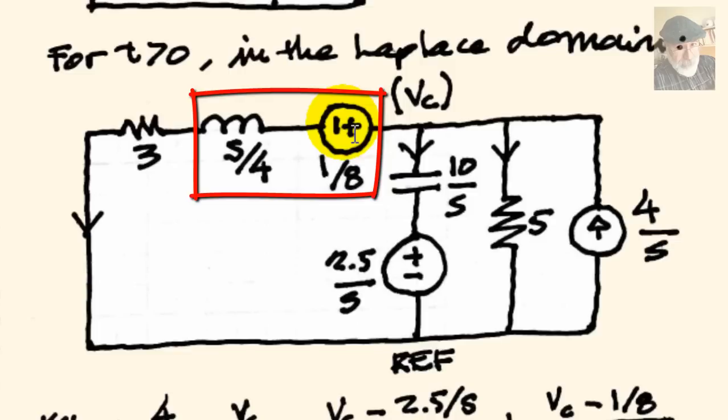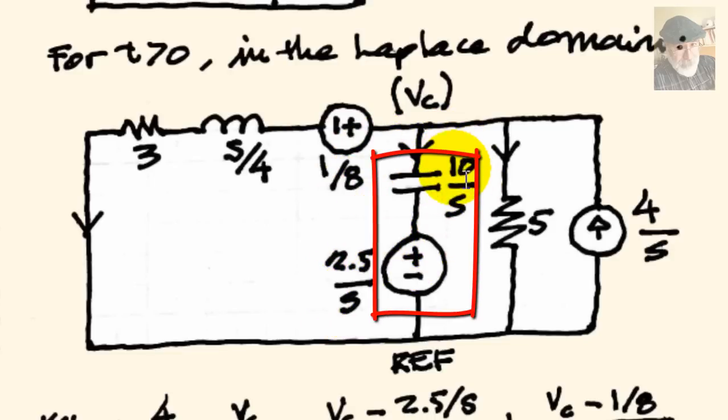L times IL0, that is 1 quarter of a henry multiplied by half an amp, that is 1 eighth. Which I represent like this instead of 0.125, because, as you know, I prefer to use fractions of integers for the sake of the HP50G. The capacitor is represented as an impedance, 1 over cs. The capacitance is 0.1 farad, so that means that 1 over cs is 10 over s. And an initial conditions voltage source, that is VC0 divided by s, 2 and a half volts divided by s. And the current source, of course, is 4 over s, the Laplacian form of the constant 4 amps.